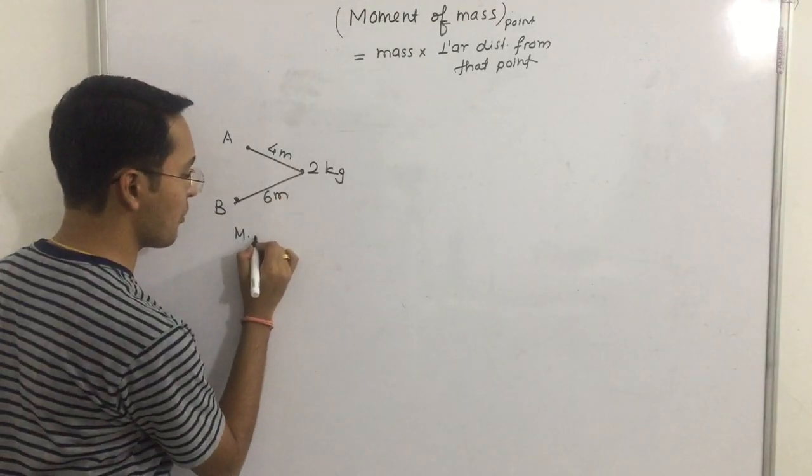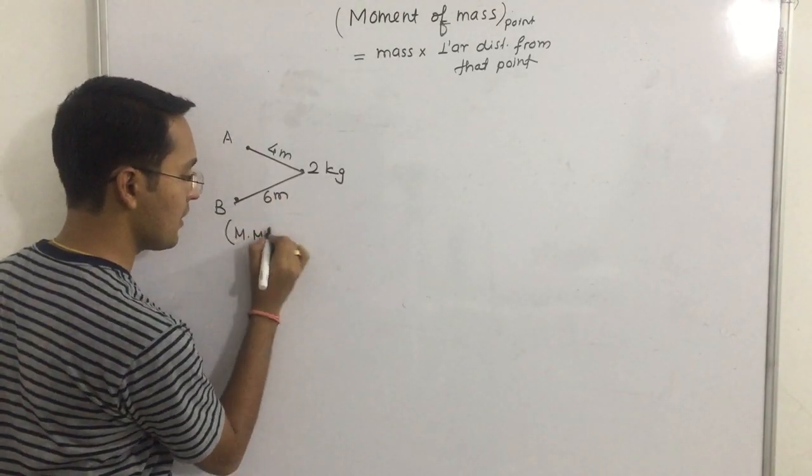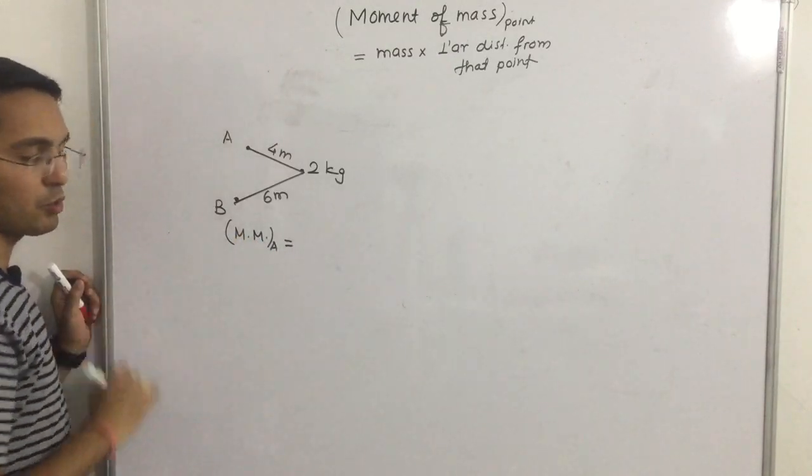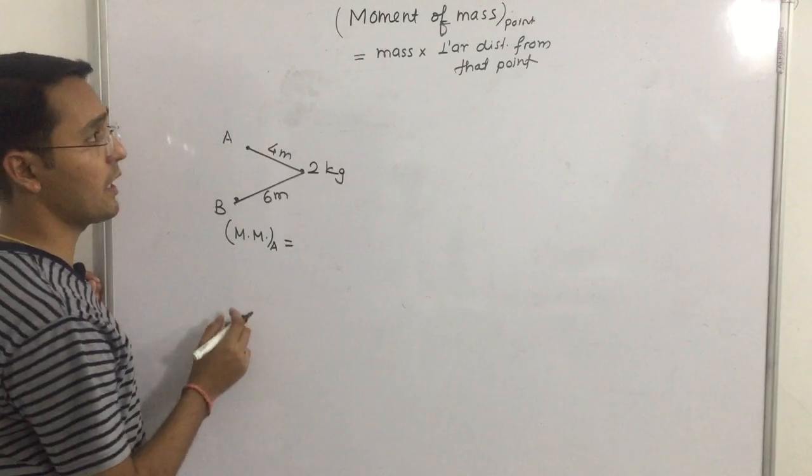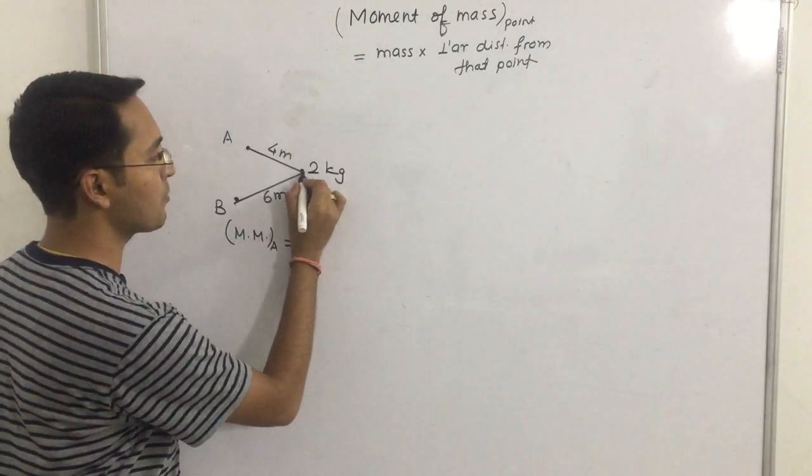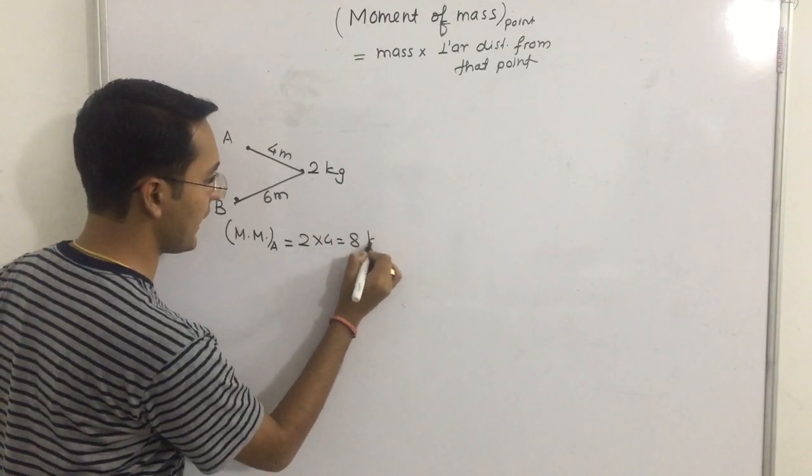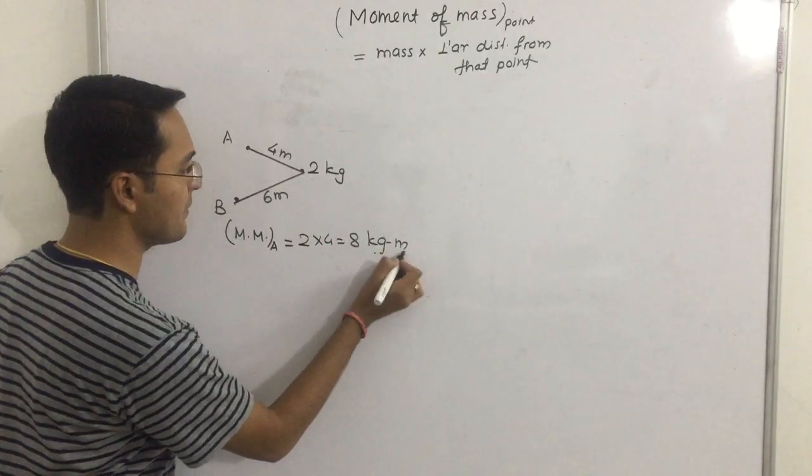If you ask what is the moment of mass about A? Moment of mass about A: 2 into 4, that is 8 kg meter. Units: kg meter, mass into distance.